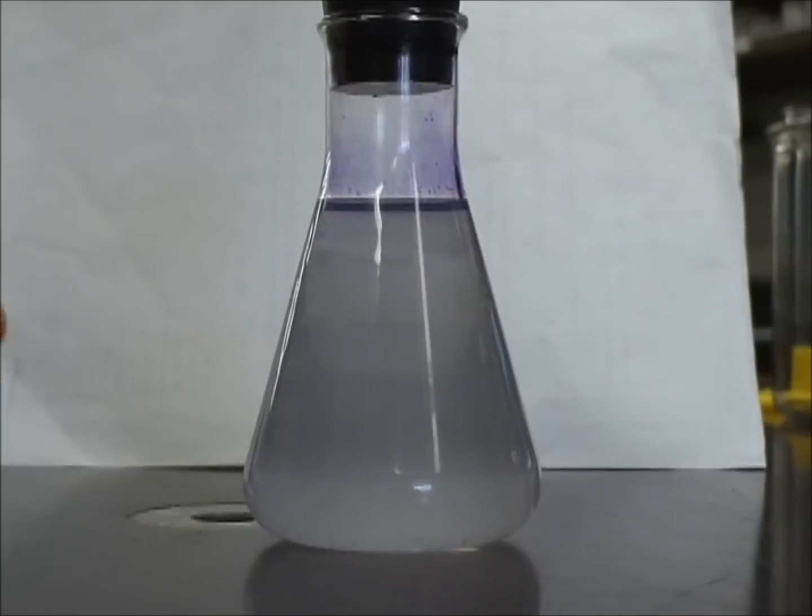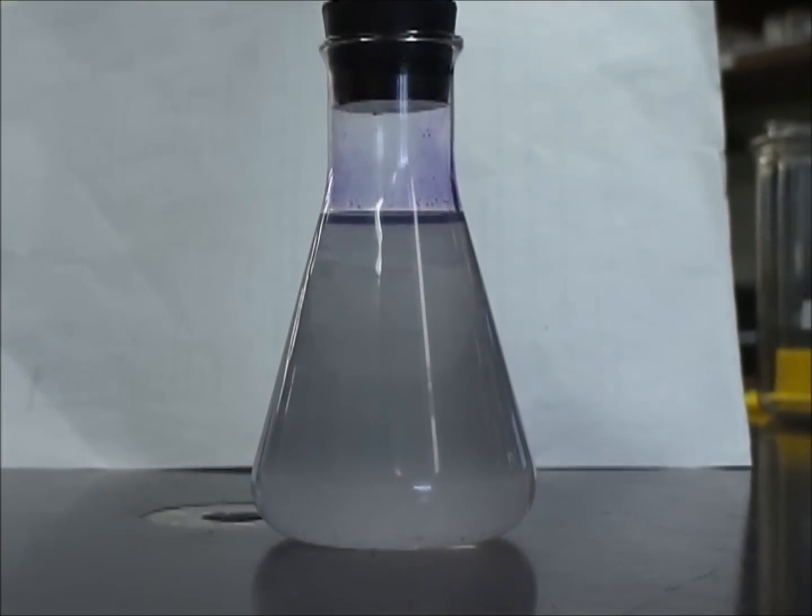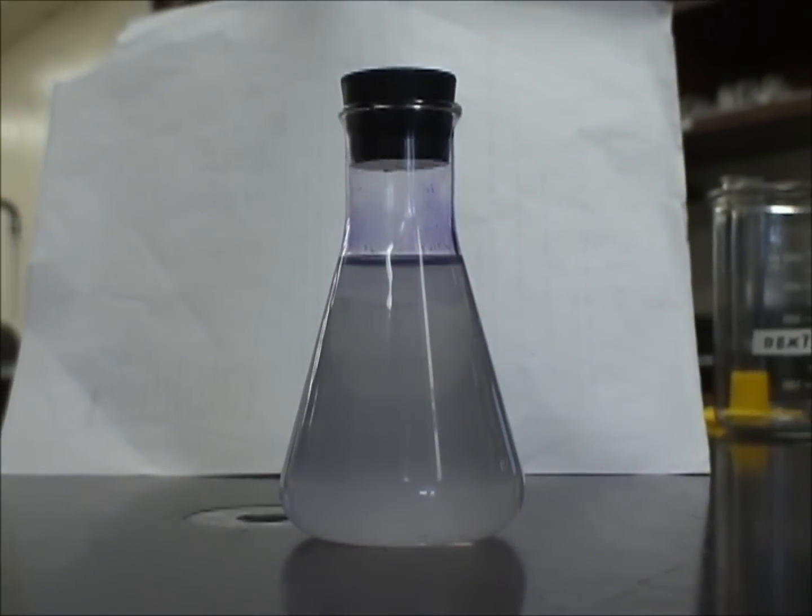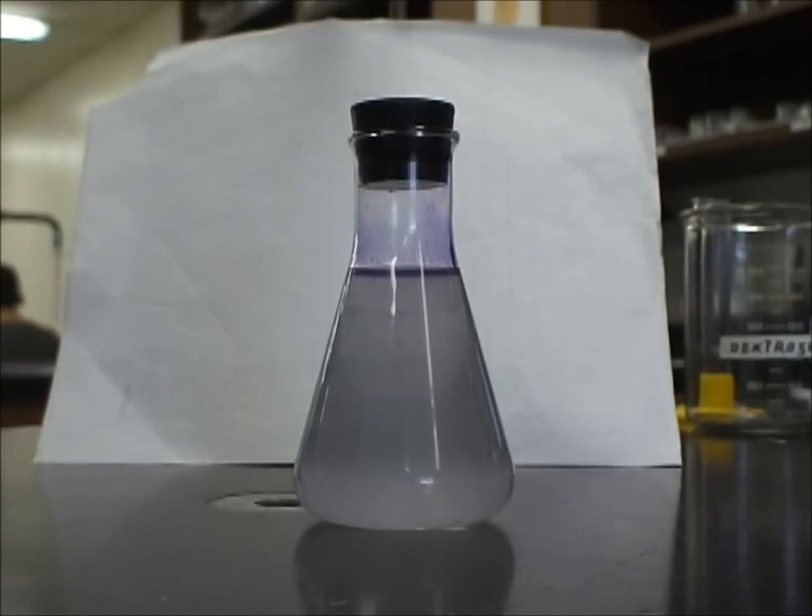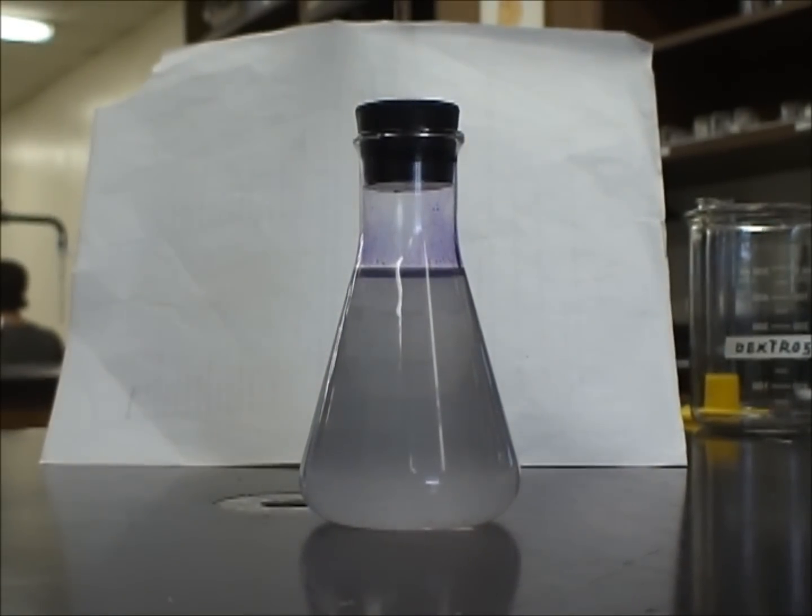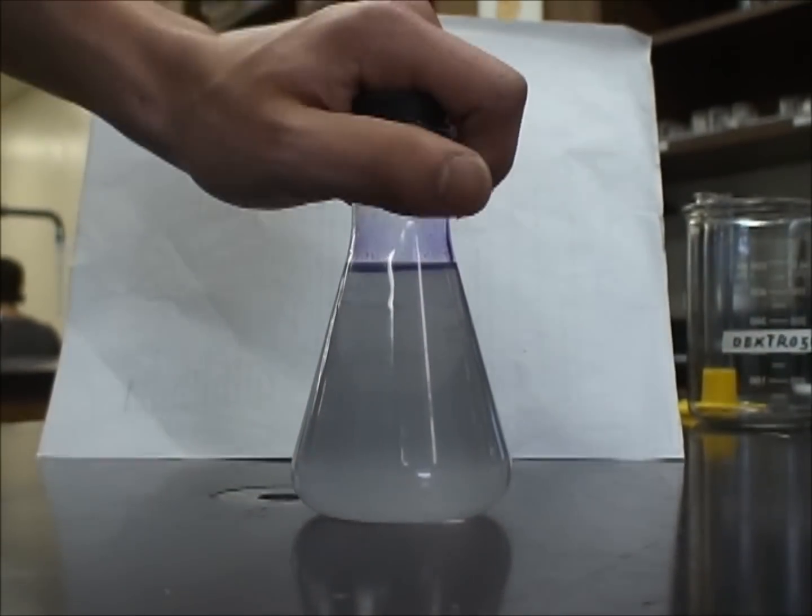Now, this is a reversible reduction-oxidation reaction, so what's going to happen is when I shake it, it's going to be oxidized, and the methylene blue is going to turn a darker shade of blue. You can see that now.